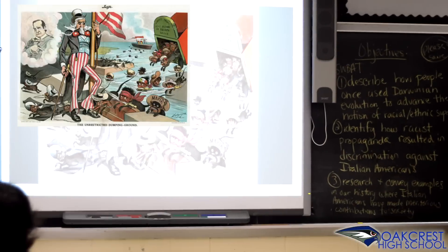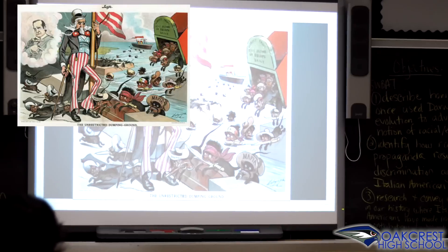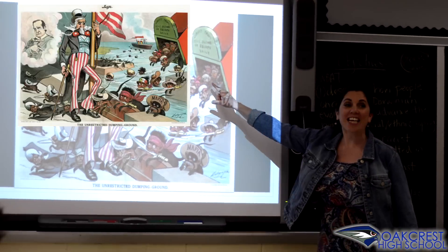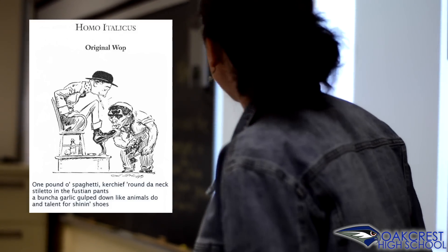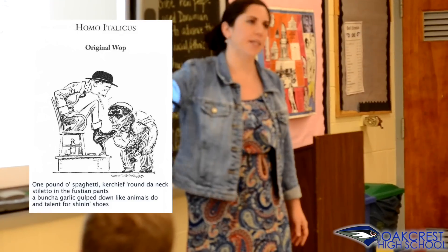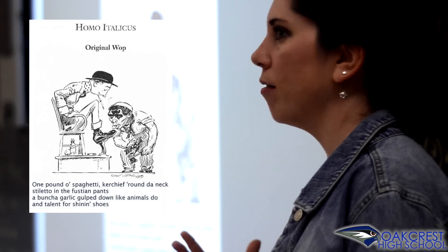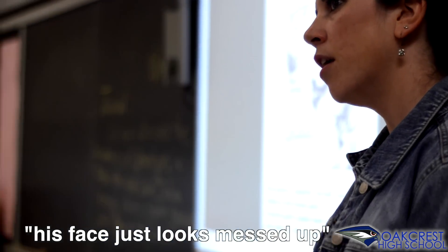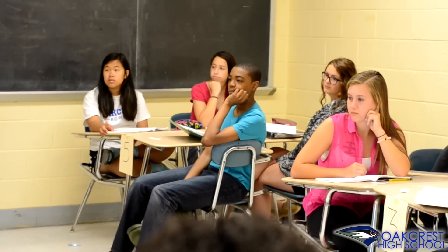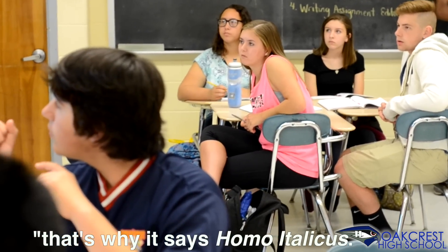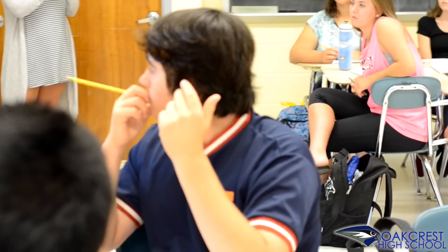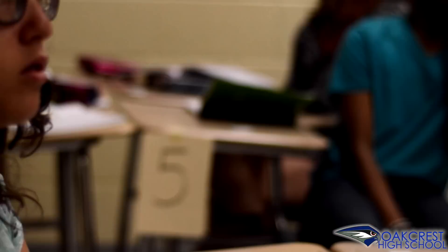Now this is a really early political cartoon, probably around 1920, and you can see that these are Italian immigrants. Here's another one — this is the Italian, allegedly. What do you notice about this physical structure? Like an ape, right? That's why it says Homo erectus — it's an allusion to Homo erectus. The caption reads: one pound of spaghetti, curti round the neck, stavaro in the first skinned hands — I don't know what that means — a bunch of garlic gulped down like animals do, and talent for shining shoes.